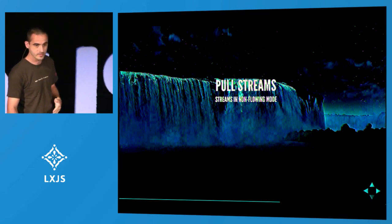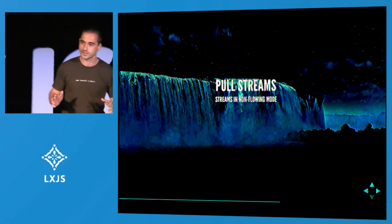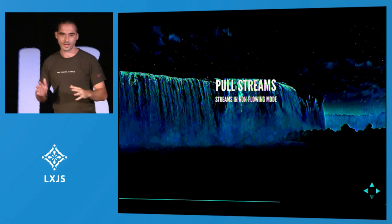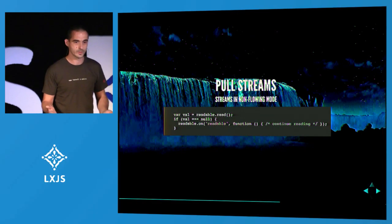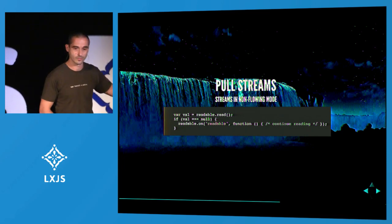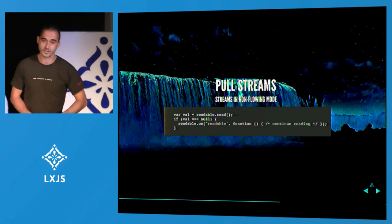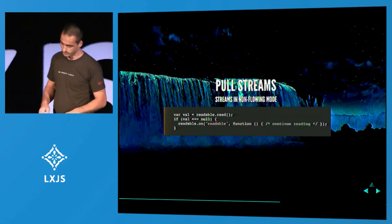The pull streams are streams that are still in non-flowing mode. As far as I understand, all streams start out in non-flowing mode — they only start flowing once you subscribe to on-data. To get values out of those readable streams, we call readable.read. But there may not be a value at some point — we may read three times and then there's no more value, which is kind of like the waiting room is empty. What we do then is register the readable event — that's basically the bell that the doctor would install.